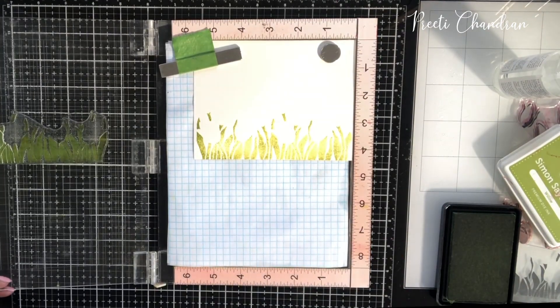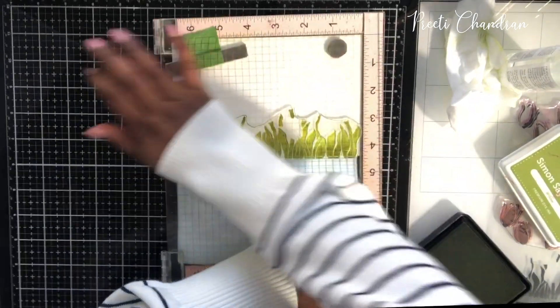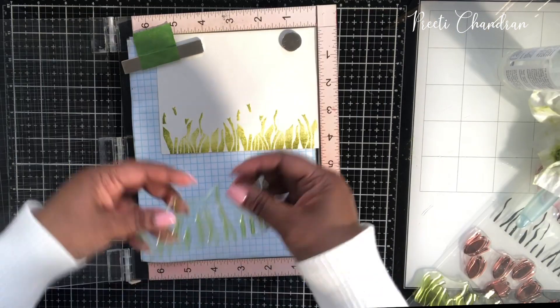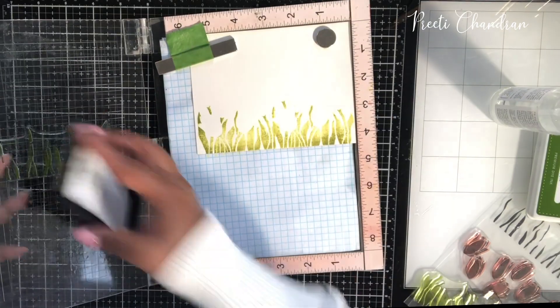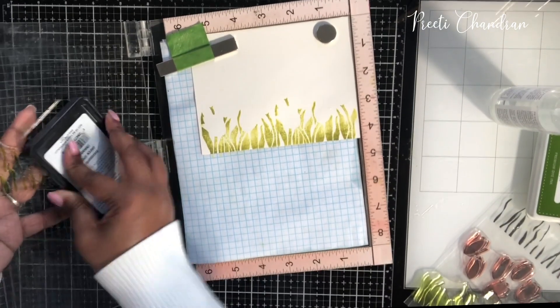The second time after I inked it up, I added water directly to the stamp before I inked it. The third time I just added a little bit right at the bottom so it gives that darker shadow. The one that I showed just before.